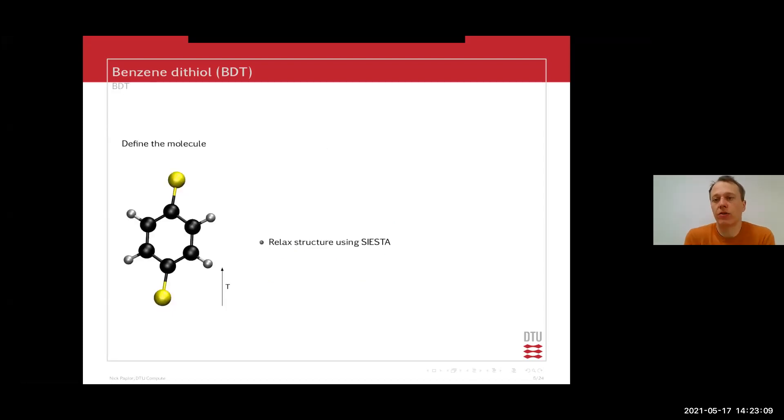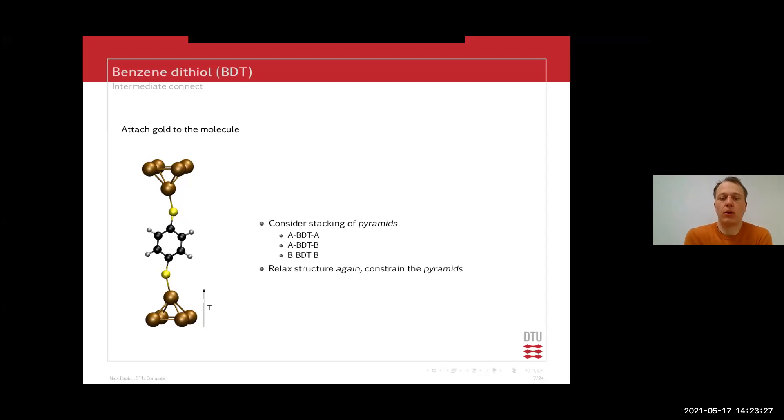Then you need to define your scattering region. In this case, it's this benzene dithiol molecule. So you relax it, you can start by relaxing this without adding any kind of gold surface layers. So you start relaxing this, then you attach some pyramids that are going to be your connectivity towards your electrodes. And here you need to consider how you want to stack them or attach your molecule towards the electrode. So this could be an A-layer BDT-A layer or an A-BDT-B or B-BDT-B.